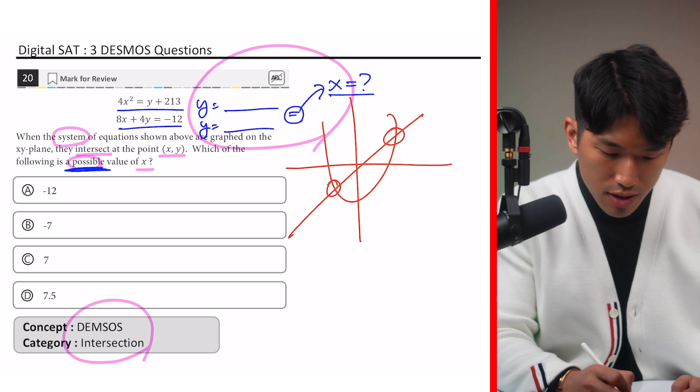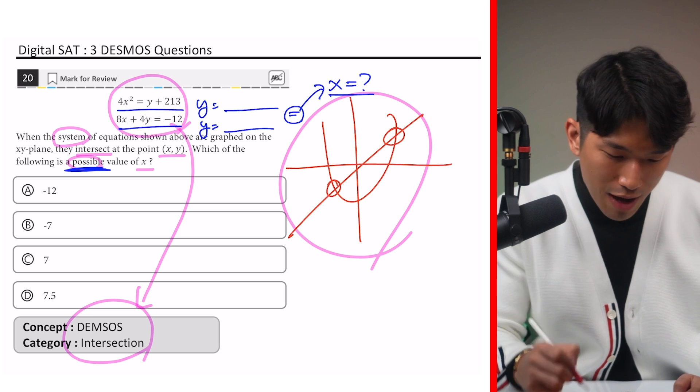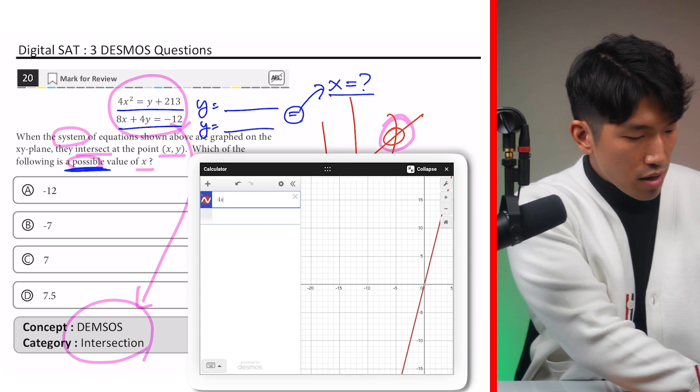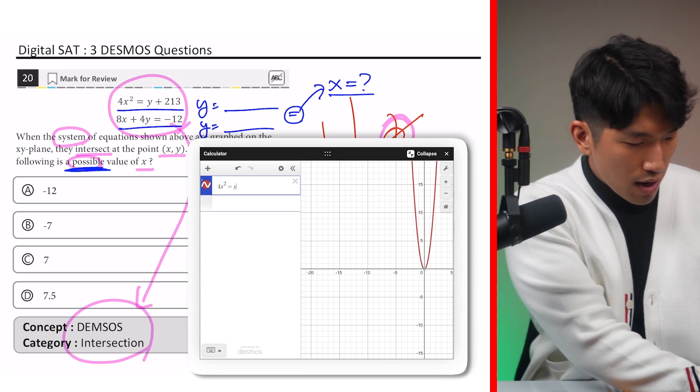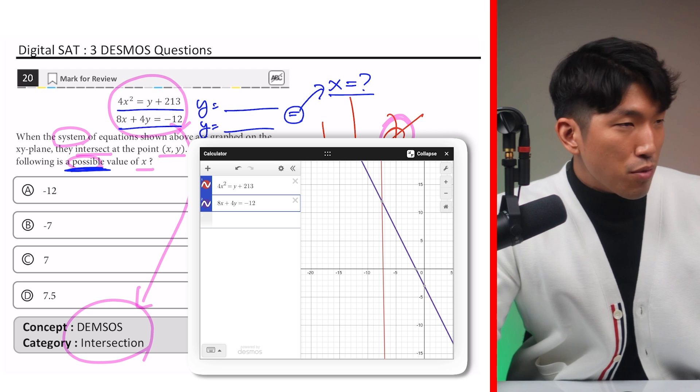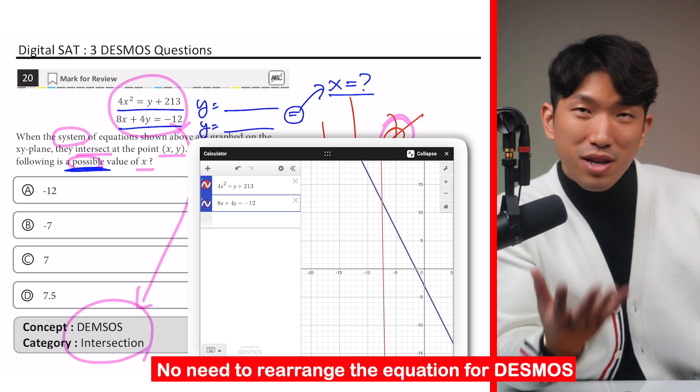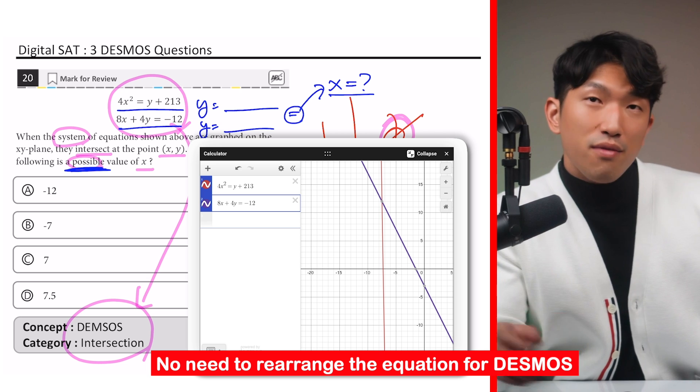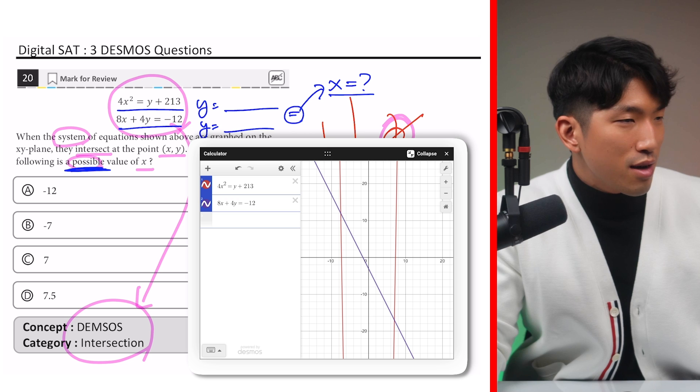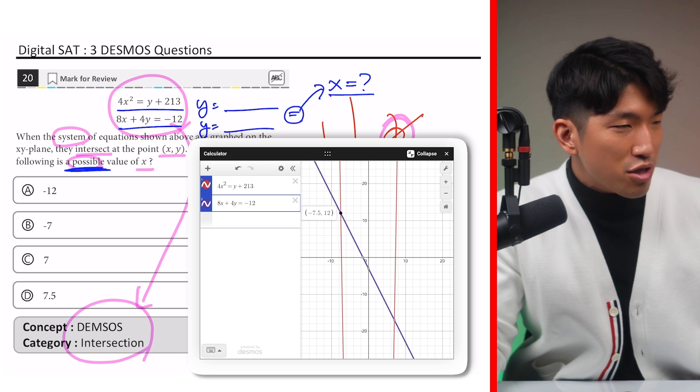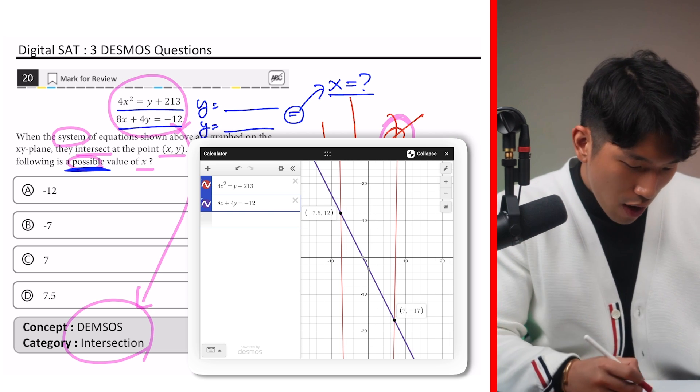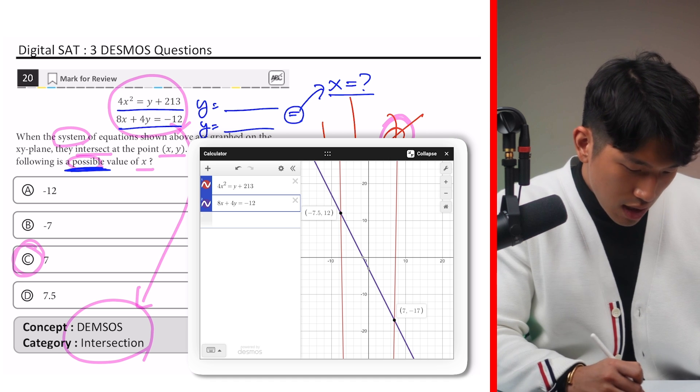Instead of doing all the math, we're simply going to plug these two equations into Desmos, graph them out visually, and find out where the intersections are located and find out what the x-values are going to be. So if we plug it in, we're going to get 4x squared is equal to y plus 213, and 8x plus 4y is equal to negative 12. And by the way, guys, you don't have to rearrange the equation for Desmos. Just pop it in ugly. It's going to be fine. And for us to find the point of intersection, we're just going to zoom out a little bit, and we're going to click one of the graphs. And this gray point right here is going to show us where the intersections are located. It's at minus 7.5 and 7, which means our answer is going to be choice C because that's the only answer.